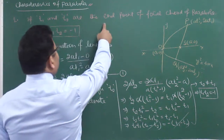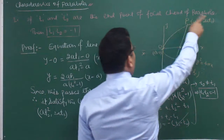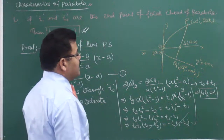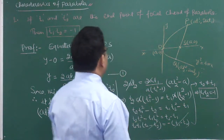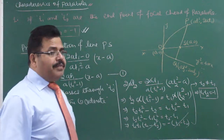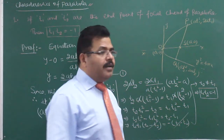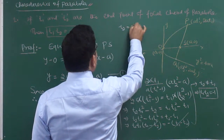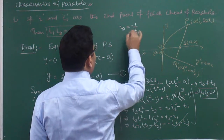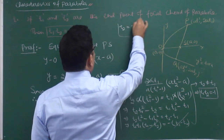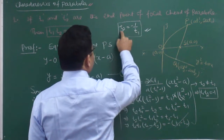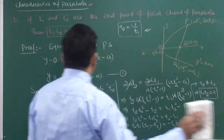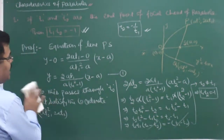T1 and T2 are the endpoints of the focal chord of the parabola, then T1·T2 = -1. You need to remember and use it. If T1 is one end of the focal chord, then T2 = -1/T1. Now let me write the second property.